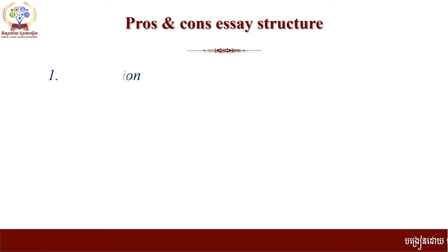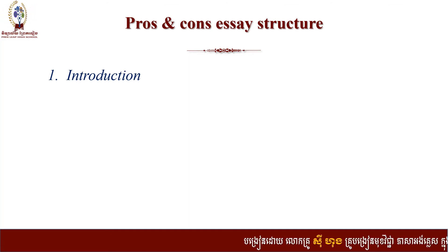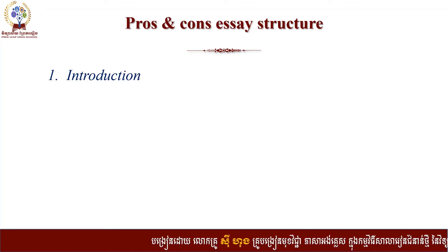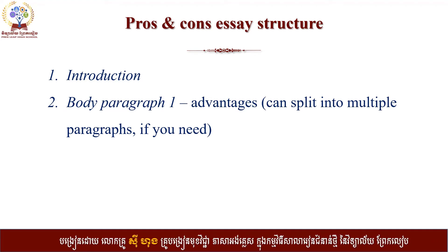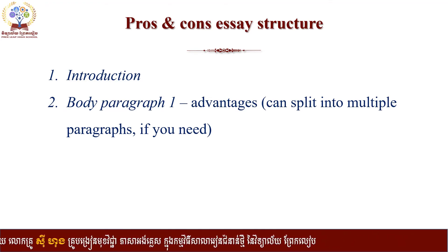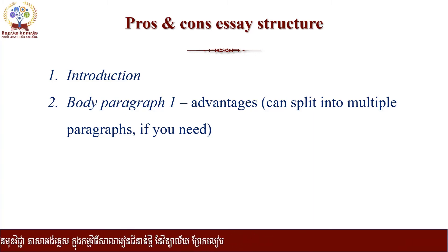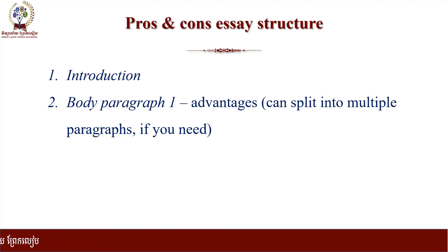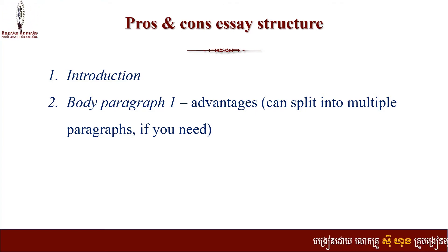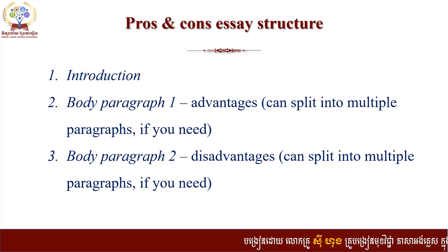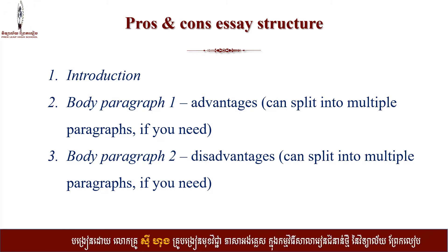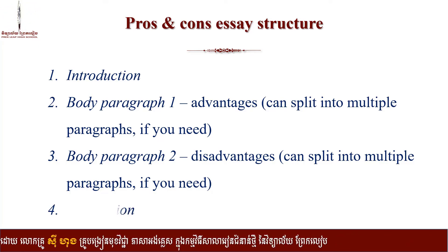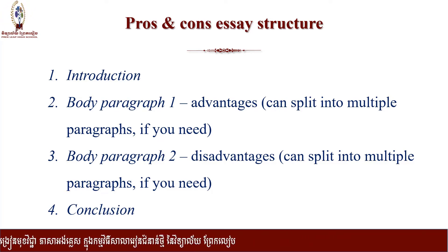Now let's see the structure of a pros and cons essay. The first section is the introduction. The second is body paragraph one, which is about advantages — you can write at least two or three advantages, the more the better. Number three is body paragraph two, where you talk about the disadvantages. And the last section is the conclusion.